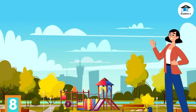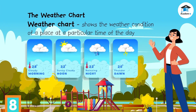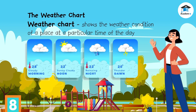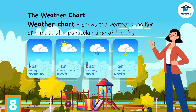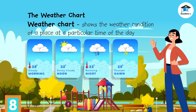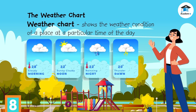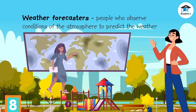Knowing the kind of weather helps us plan for our activities. We can look at a weather chart to know what kind of weather to expect for the day, and even for the next few days. A weather chart shows the weather condition of a place at a particular time of the day. There are people whose work is to observe conditions of the atmosphere to predict the weather as accurately as possible. They are called weather forecasters. They warn people of possible heavy rains or storms through a weather chart.